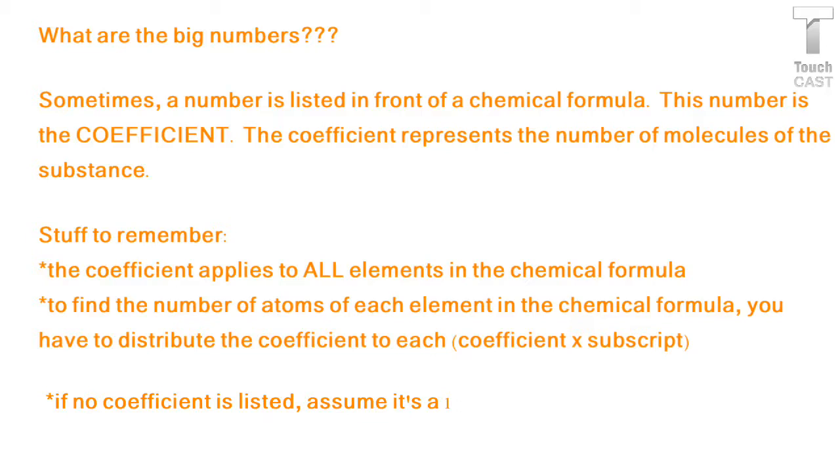The coefficient applies to all elements in the chemical formula, so everything directly behind it. To find the number of atoms, you distribute, kind of like in math, coefficient times subscript. And if no coefficient is listed, again, we assume it means one.